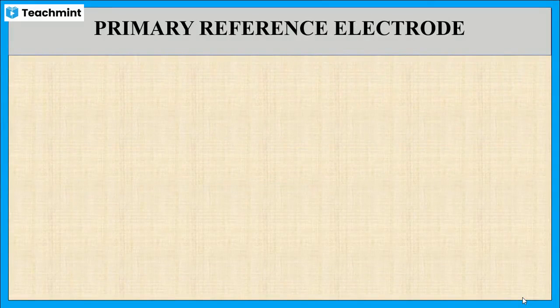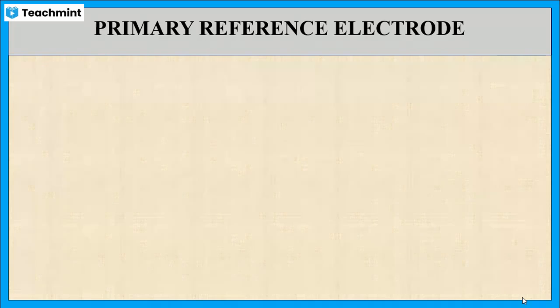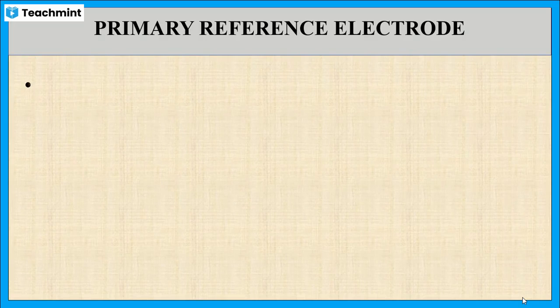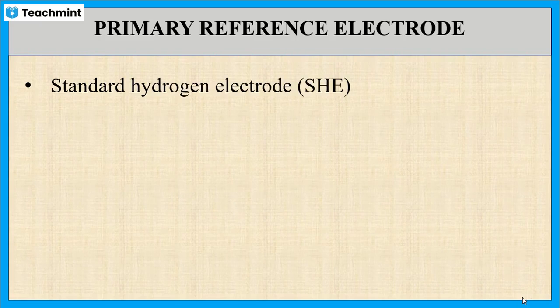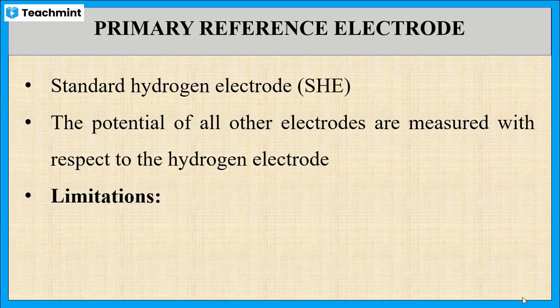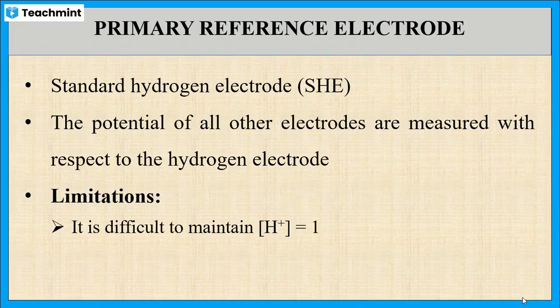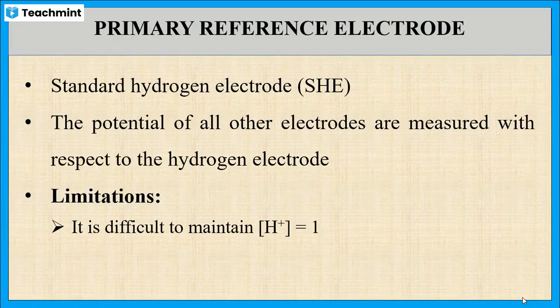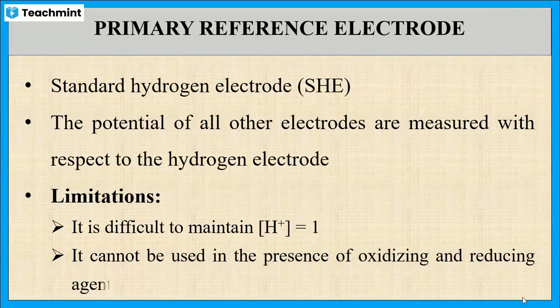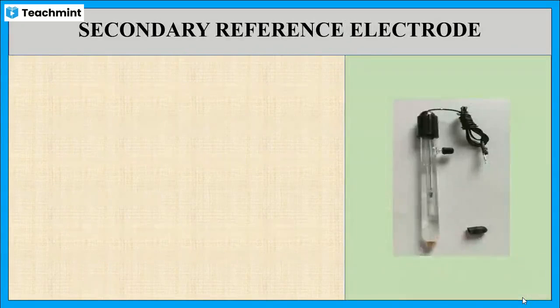There are two types of reference electrodes: one is the primary reference electrode and the other is the secondary reference electrode. A primary reference electrode is a reference electrode whose potential is taken as zero. The most common example for a primary reference electrode is the Standard Hydrogen Electrode, that is SHE. However, the Standard Hydrogen Electrode has some limitations — one limitation is that it is difficult to maintain one molar concentration of hydrogen ions.